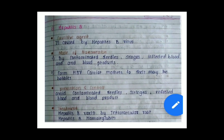Next is Hepatitis B. The causative agent is the Hepatitis B virus. Mode of transmission: by contaminated needle and syringes, infected blood and blood products, and from HBV carrier mothers to their babies. Prevention and control: avoid contaminated needle syringes and infected blood and blood products. Treatment: Hepatitis B vaccine by intramuscular route and Hepatitis B immunoglobulin.